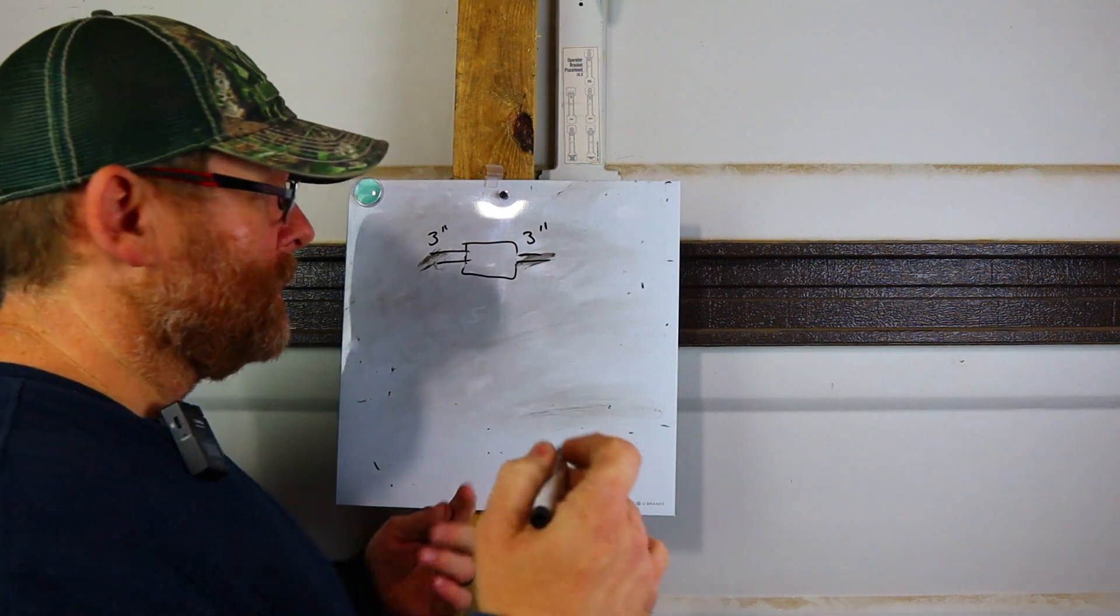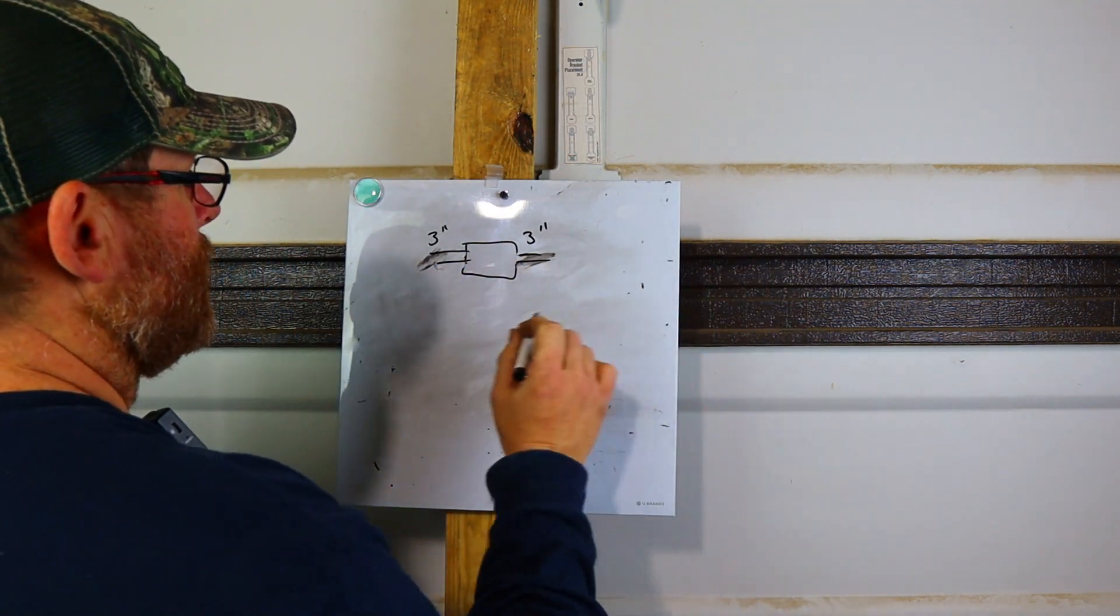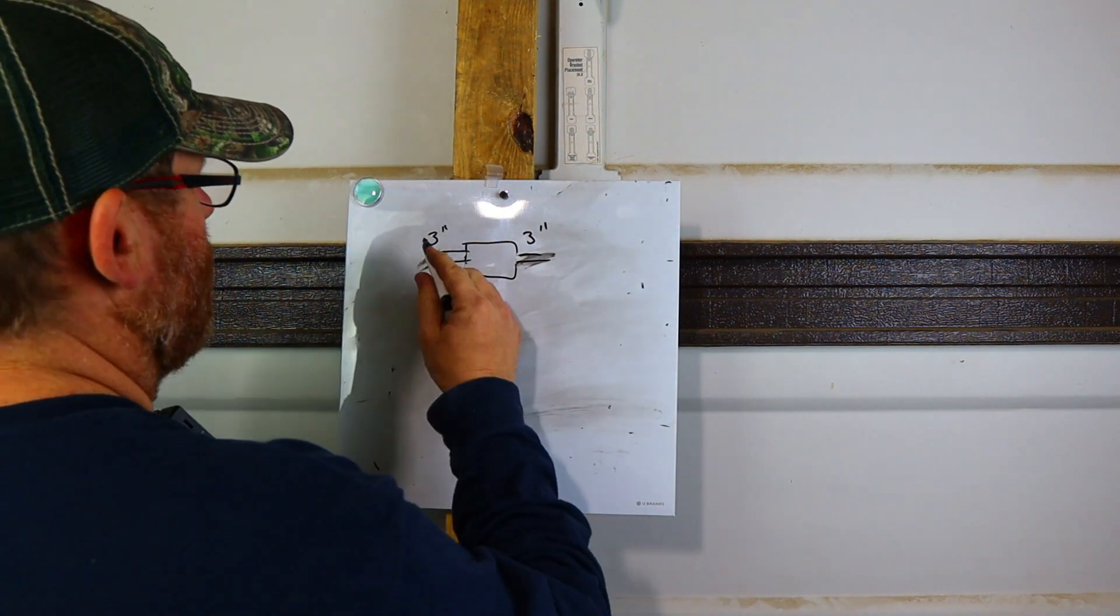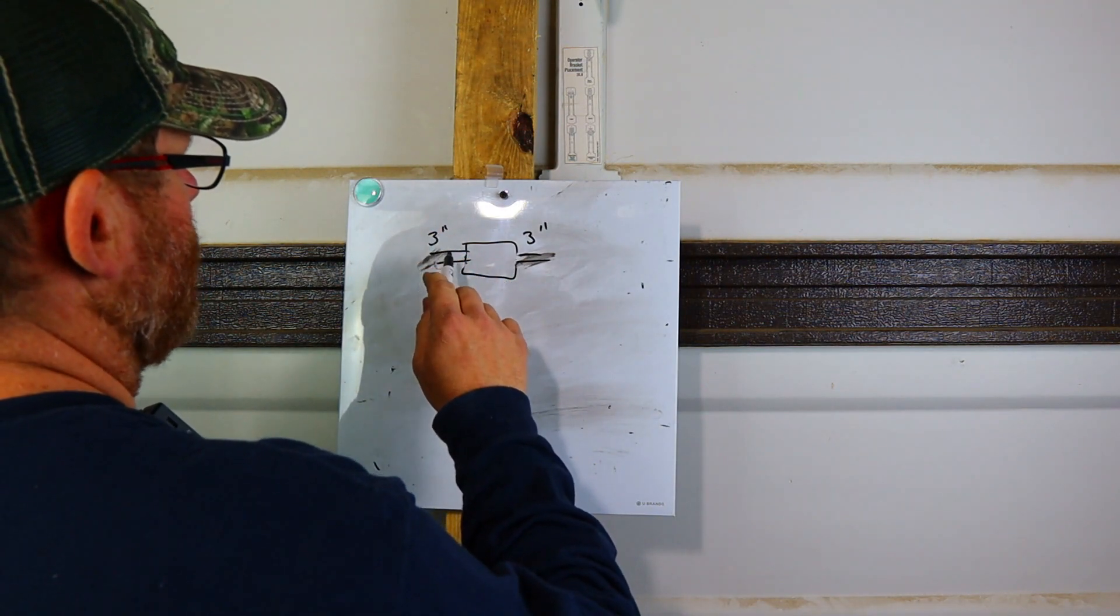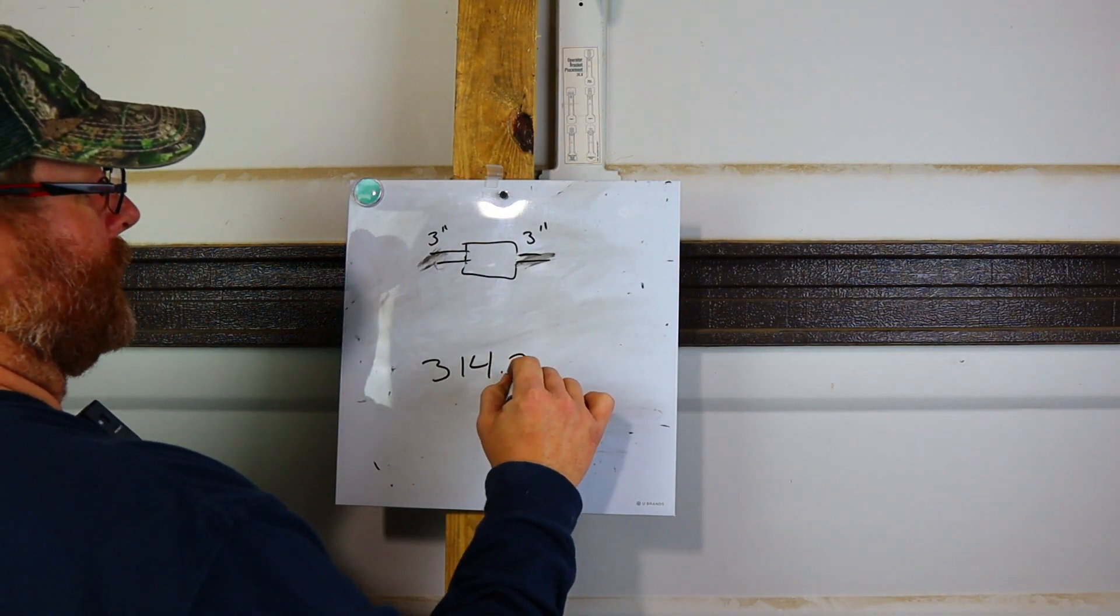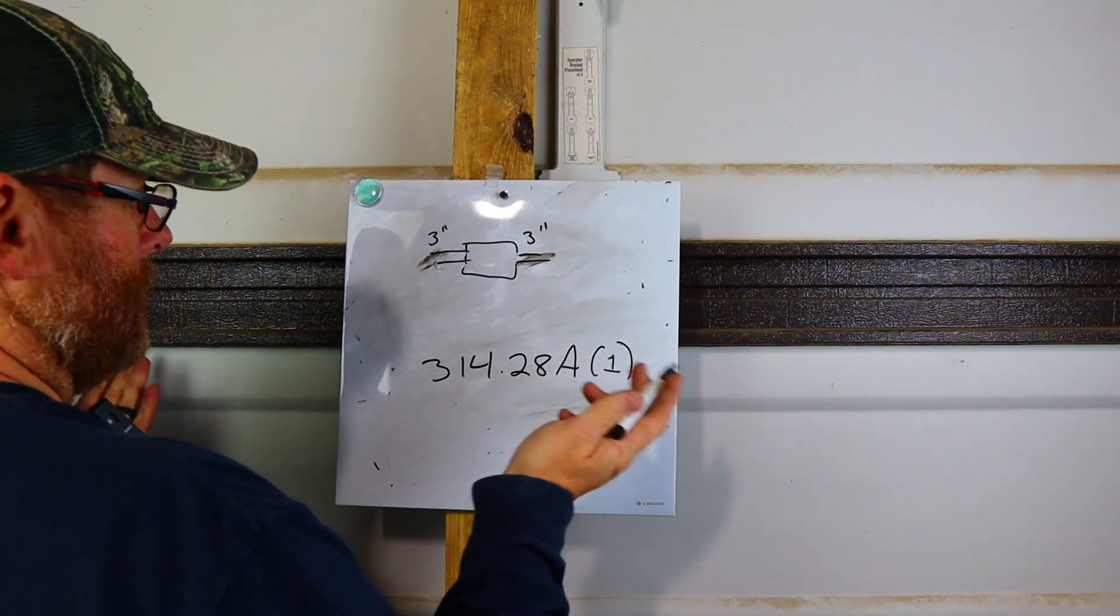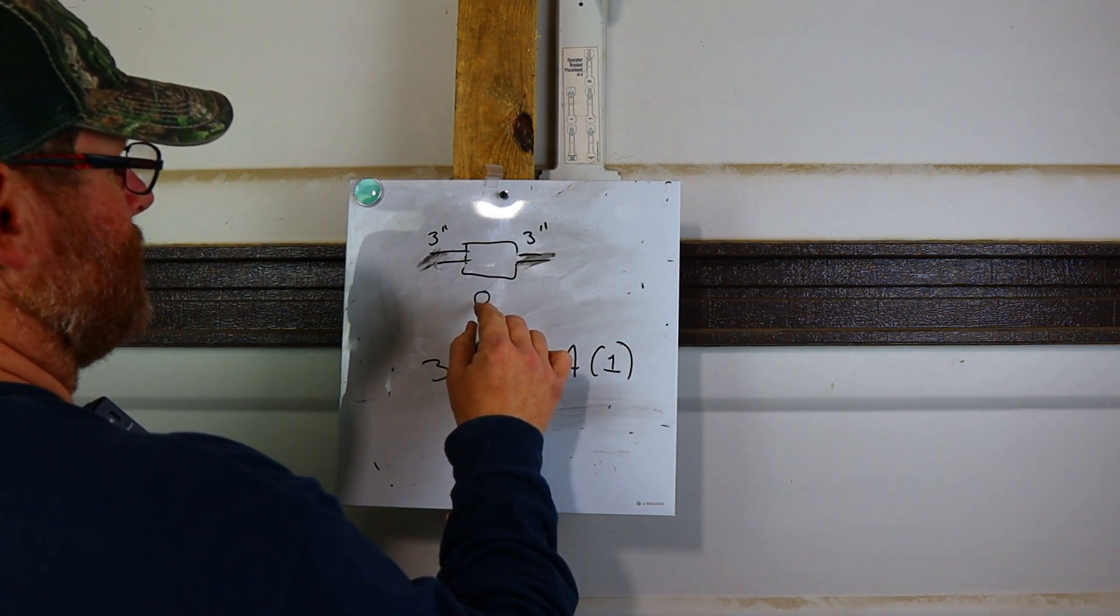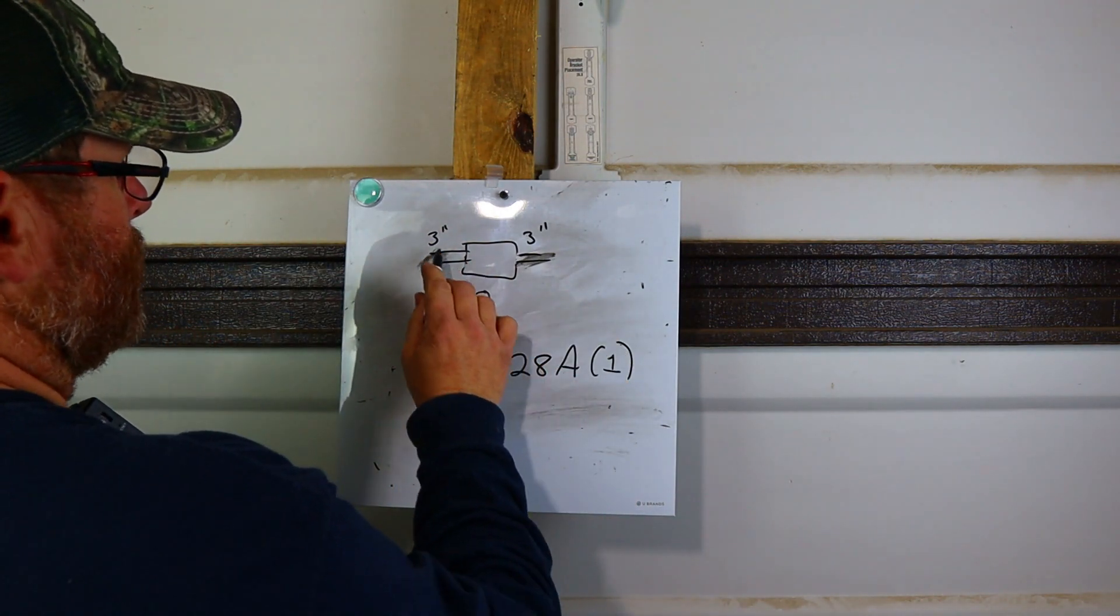This is going to be a straight pull because you see it's going straight in, straight out. Now this is your pull point. So what is the magic number? How do you figure out what size box you need? Well, it's easy. If you look in your code book at 314.28(a)(1), you go there and it tells you exactly what I'm going to tell you. The multiplier is 8. That's just what it is.